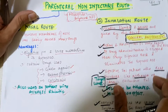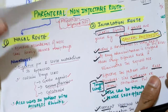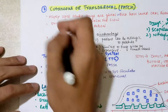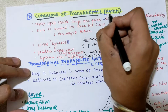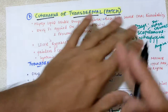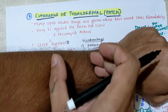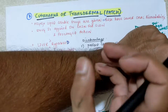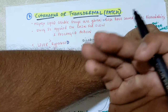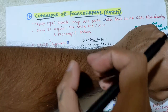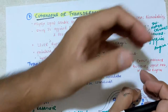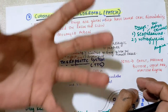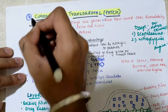The main point for the inhalation route is that general anesthetic drugs are given through this route. Now the third non-injectable route is the cutaneous or transdermal patch. This means the drug is administered over the skin. Like a bandage, you put a patch on the skin, and from there the drug is released at a very slow, constant rate into the capillaries and blood vessels, entering the systemic circulation. Absorption is very slow.